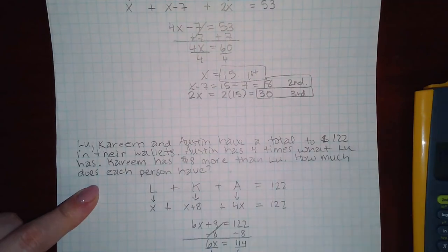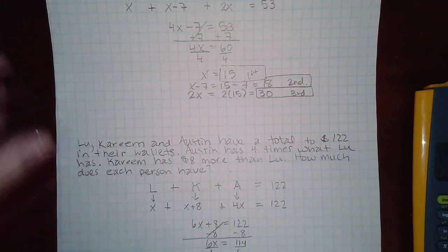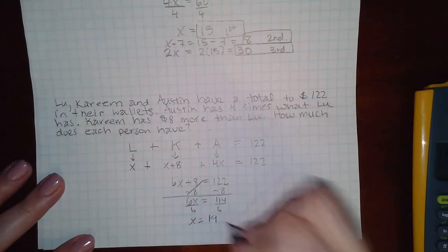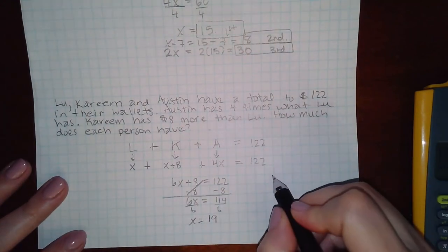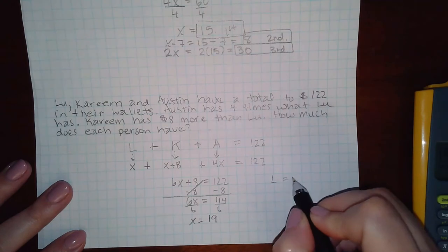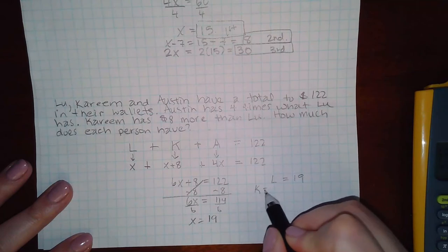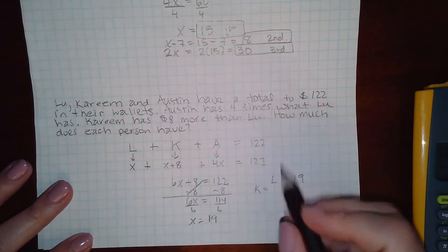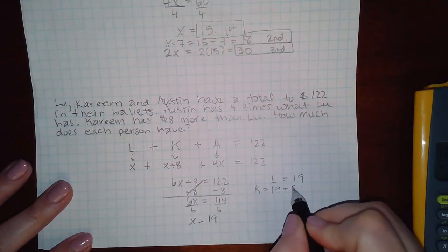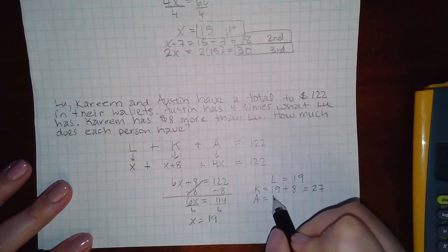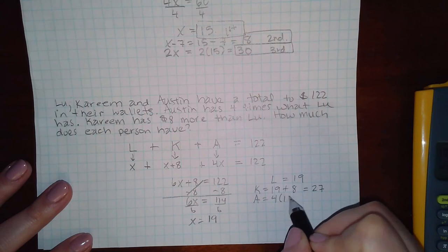I get x equals 19, which means Lou has $19 because Lou equals just x by itself. Kareem has x plus eight, so 19 plus eight, which is 27.